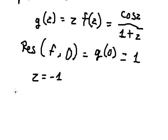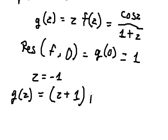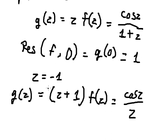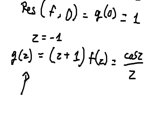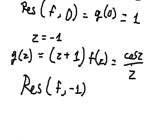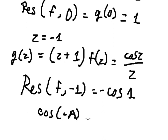For the next pole at z equals negative one, we compute g(z) equals (z plus one) multiplied by f(z), which gives us cosine z over z. Now we can find the residue of f at z equals negative one, so we put negative one in here and we get negative cosine of one, because cosine of negative a equals cosine a.